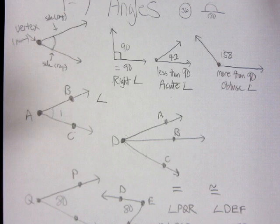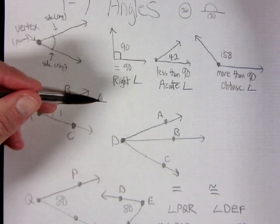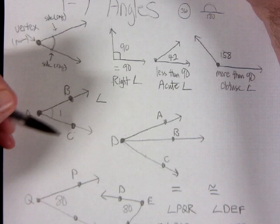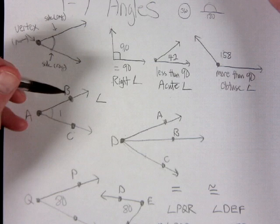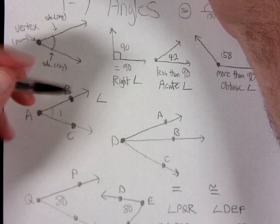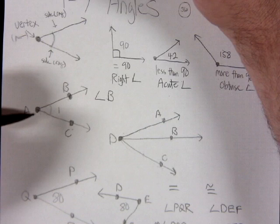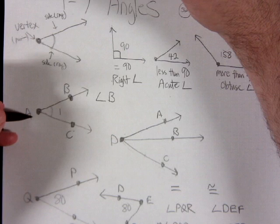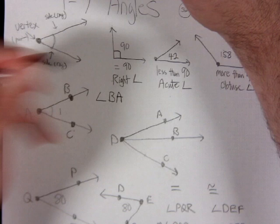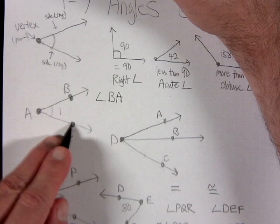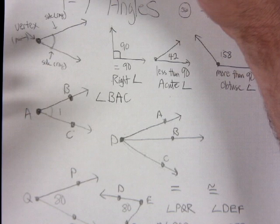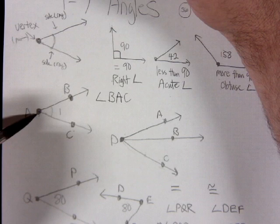We use the angle symbol — just like lines, segments, and rays have symbols. When naming an angle, you use three letters: the first is a point on one side of the angle, the middle letter must always be the vertex, and the third letter is a point on the other side. So this angle is named angle BAC.